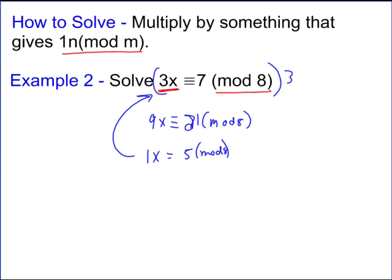So, whenever we do these, what we're going to remember is, what do I multiply by the coefficient of the variable to give me 1 mod n? And we'll solve some more examples in the next video.